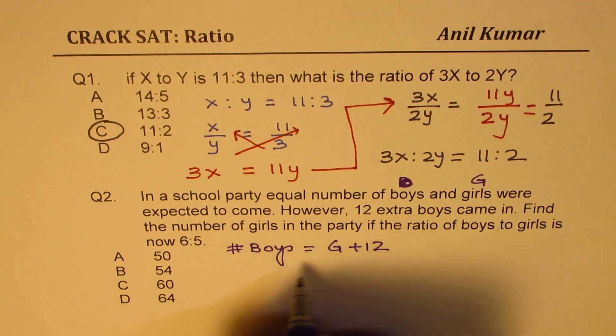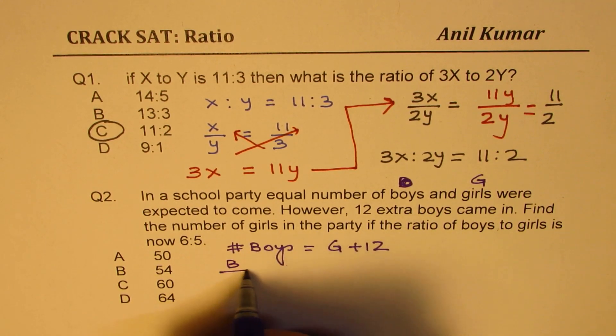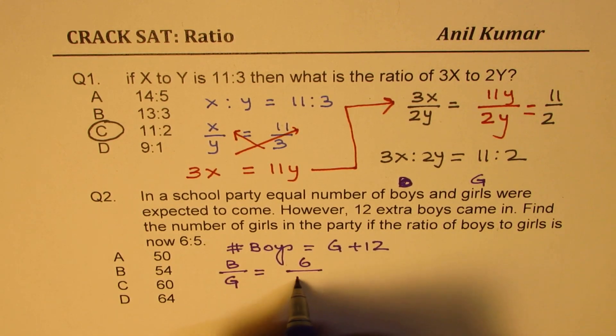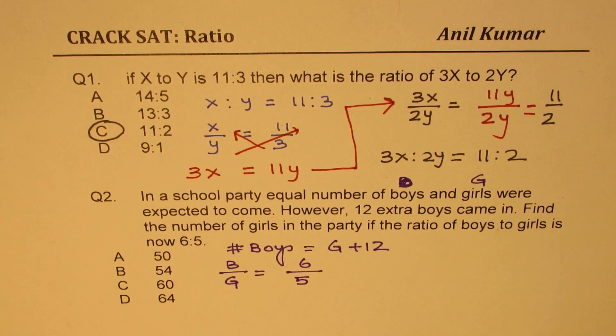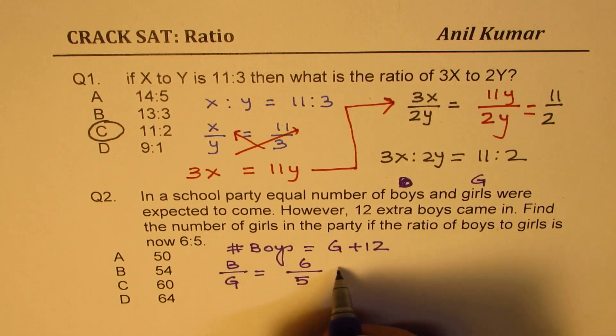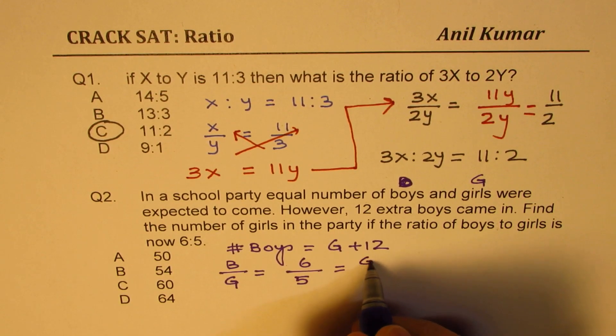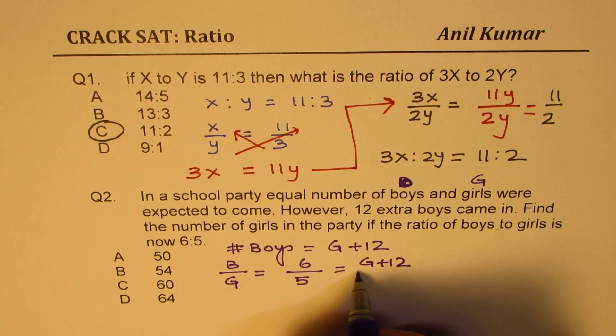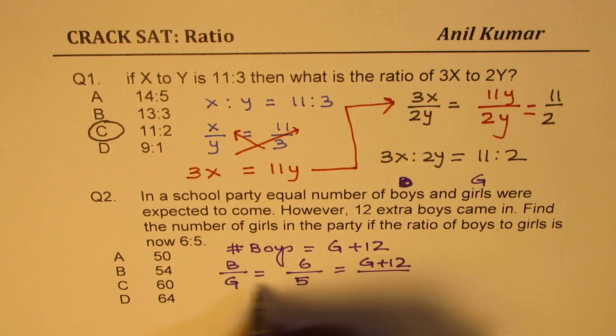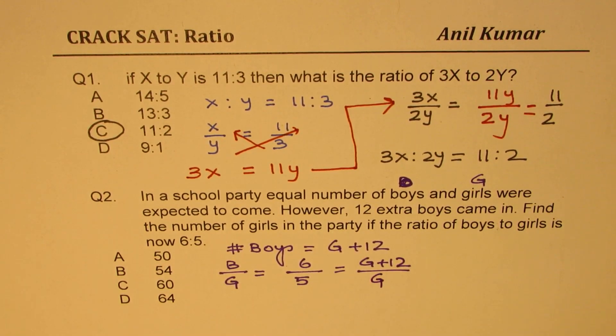So what we are given here is that this ratio of boys to girls is 6 to 5, correct? But boys could be written as girls plus 12 and number of girls is G for us, correct?